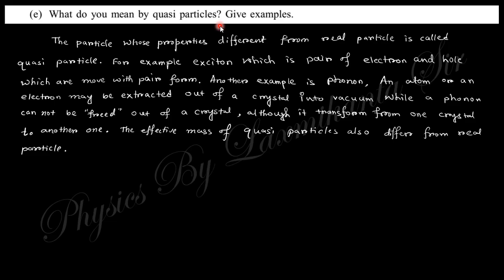Another example is phonon. Phonon is also a quasi particle where its velocity will be different and it cannot exist in free space. It transfers from one crystal to another crystal. You know a real particle can exist in free space, but phonon cannot exist in free space. So these are quasi particles and they differ from real particles in their properties.